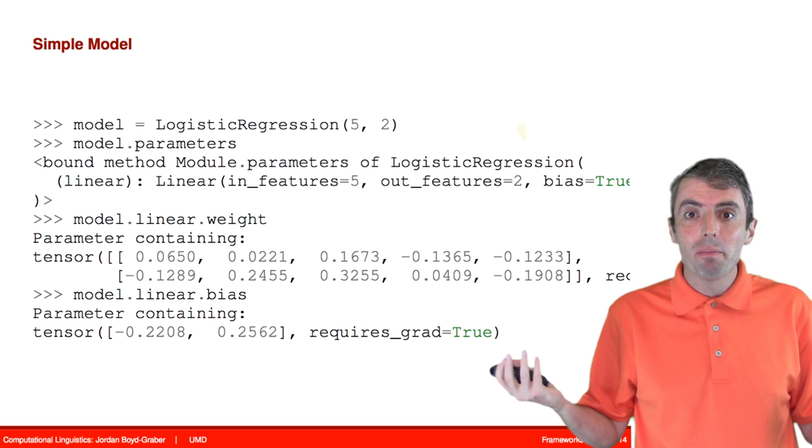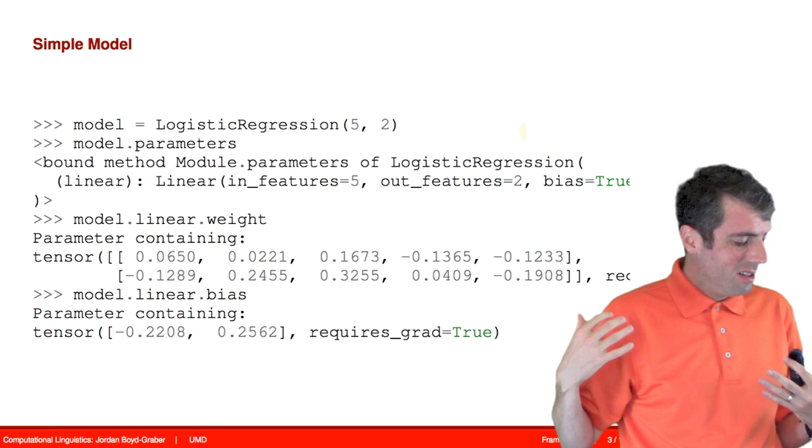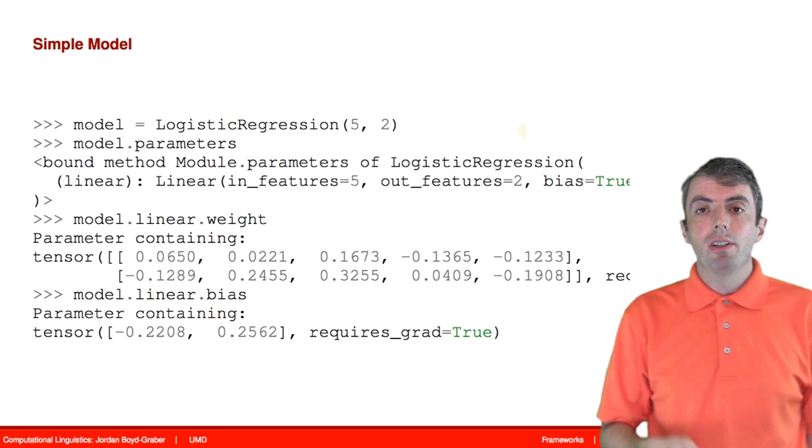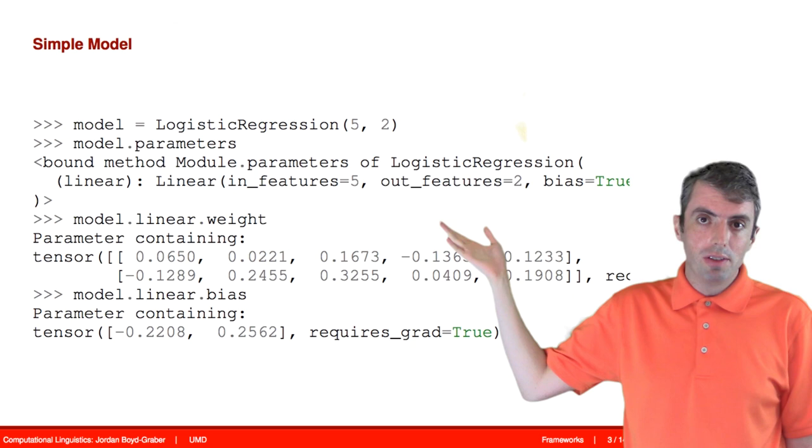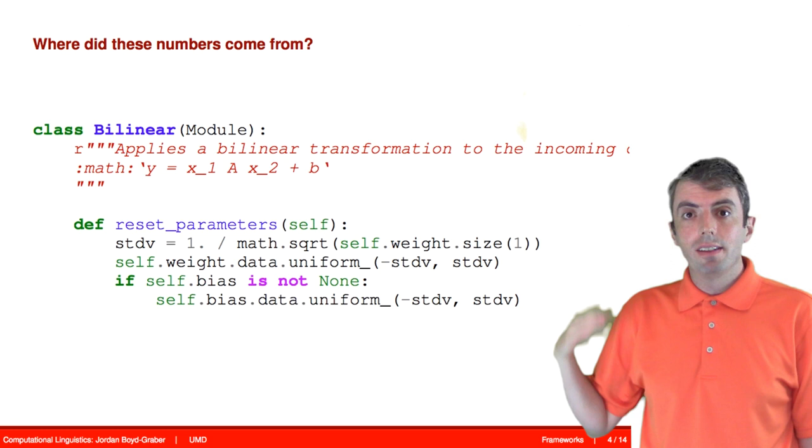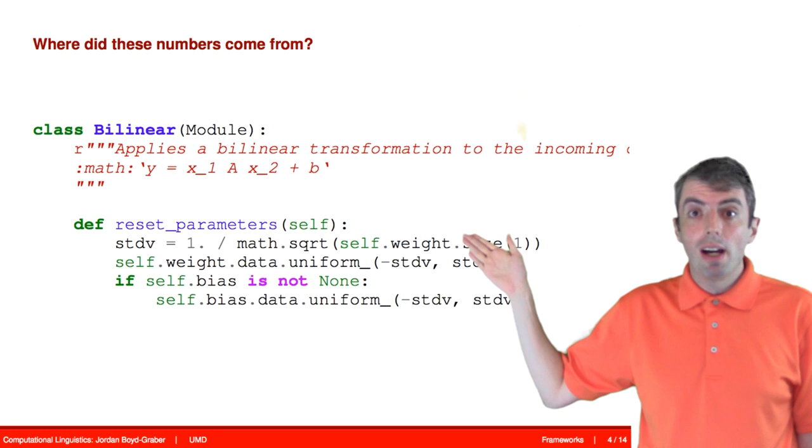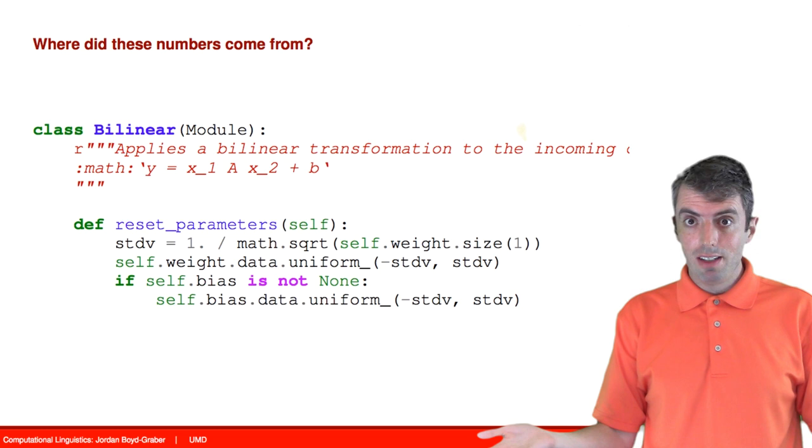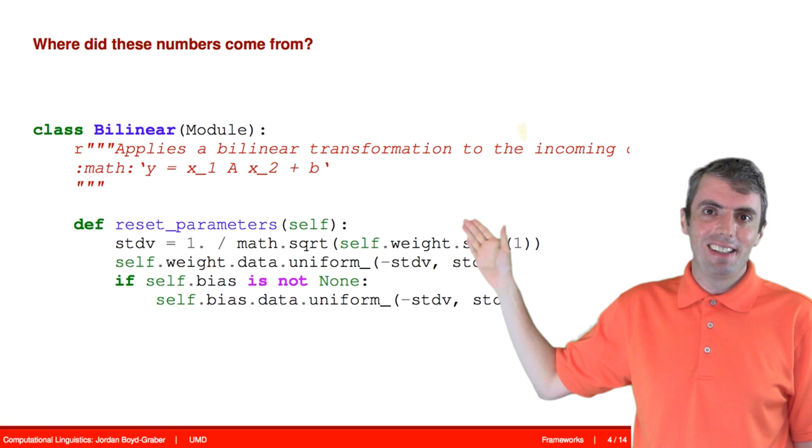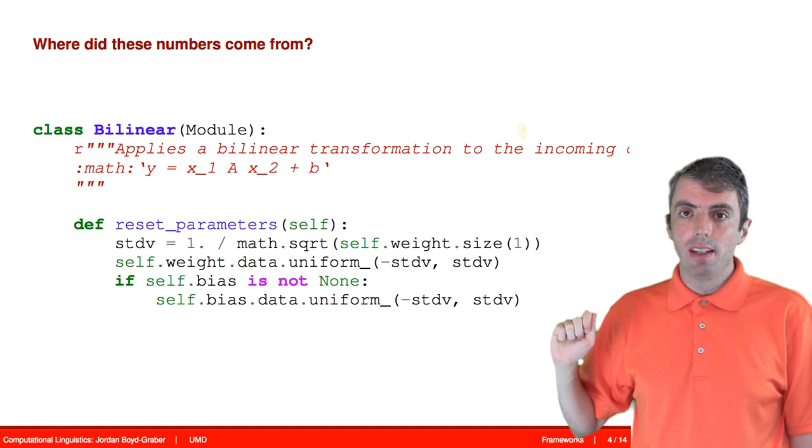So to understand that, you have to go back and look at the definition of the parameters that you're using. In this case, we use linear. We could also have used bilinear as our parameters. And typically what happens is that there is a function called reset parameters that tells you how to define a new set of parameters if you initiate your function. Typically, there is a function called reset parameters that tells you if you're creating a new instance of this class, how should the parameters be set? Or if you just want to reset the parameters, how do they get set?